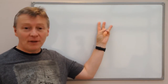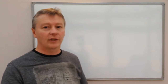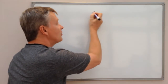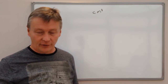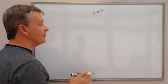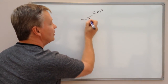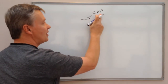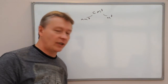Hi and welcome to 3 Minute Maths. This is all about converting units, and what we're going to do is look at units of volume, centered around centimeters cubed. The two examples I'm going to give you are: first, converting from centimeters cubed to millimeters cubed, and then converting from centimeters cubed to meters cubed.